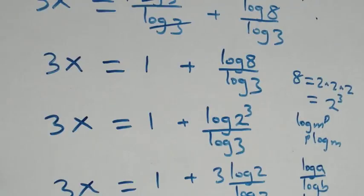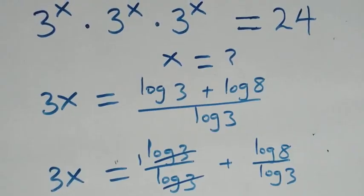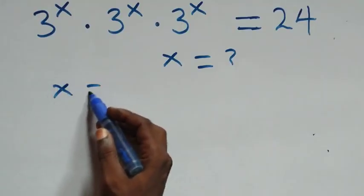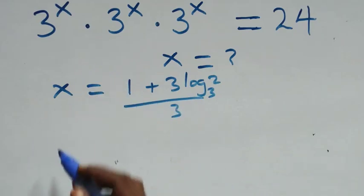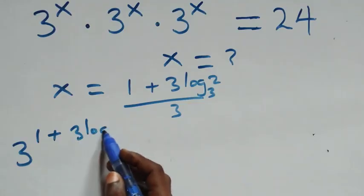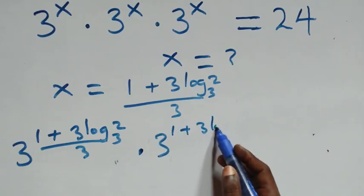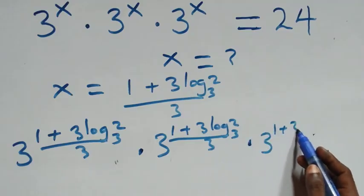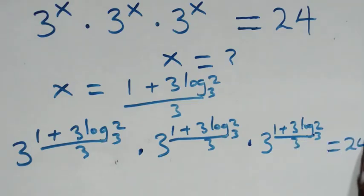Now let's check: does this satisfy the given problem? That is, x equals to (1 plus 3 log₃2) all over 3. What we have becomes 3 raised to power [(1 plus 3 log₃2)/3], times 3 raised to that same power, times 3 raised to that same power again — is this equal to 24 on this side?